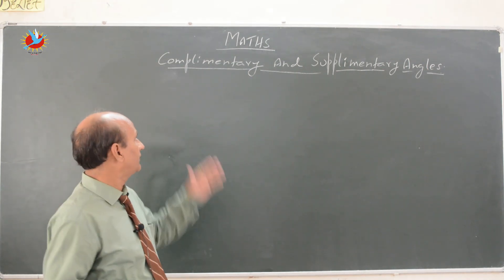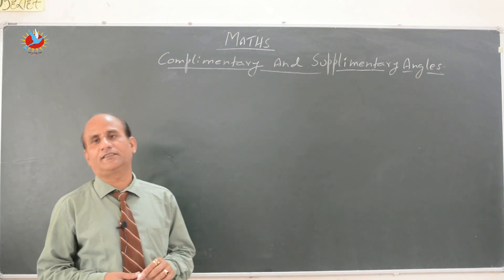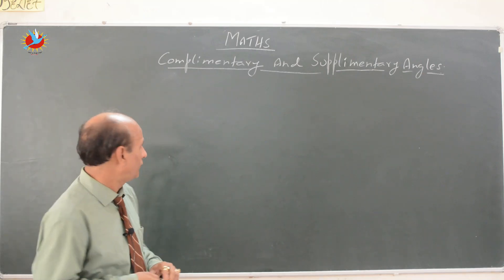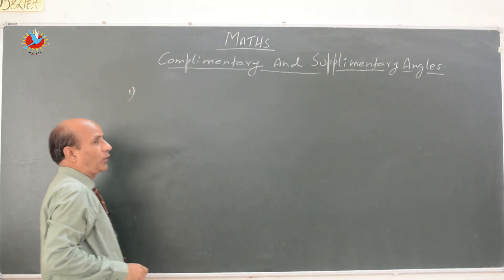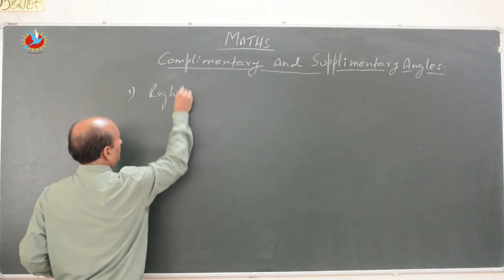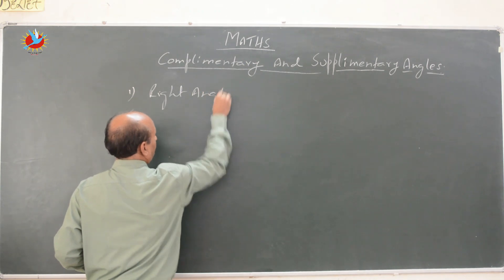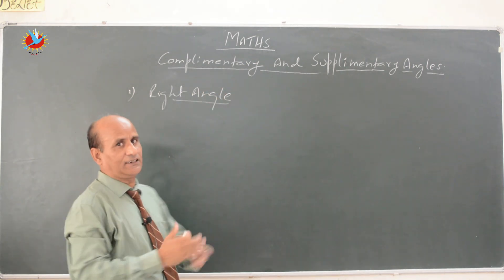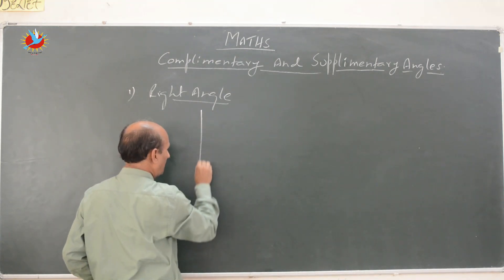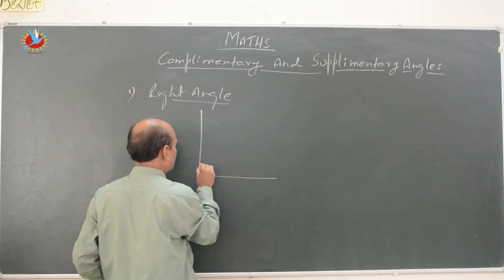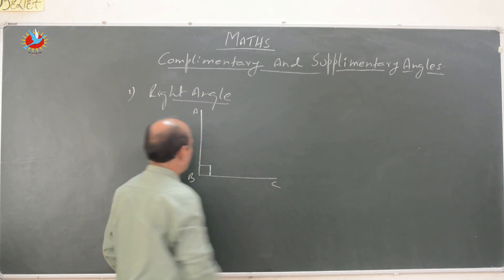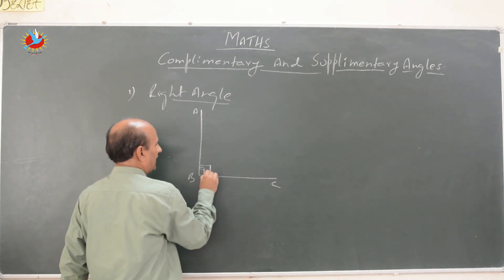Before we discuss complementary and supplementary angles, first we will see the property of a 90-degree angle and a 180-degree angle. A right angle is an angle whose measure is 90 degrees. This is a right angle and its measurement is 90 degrees.